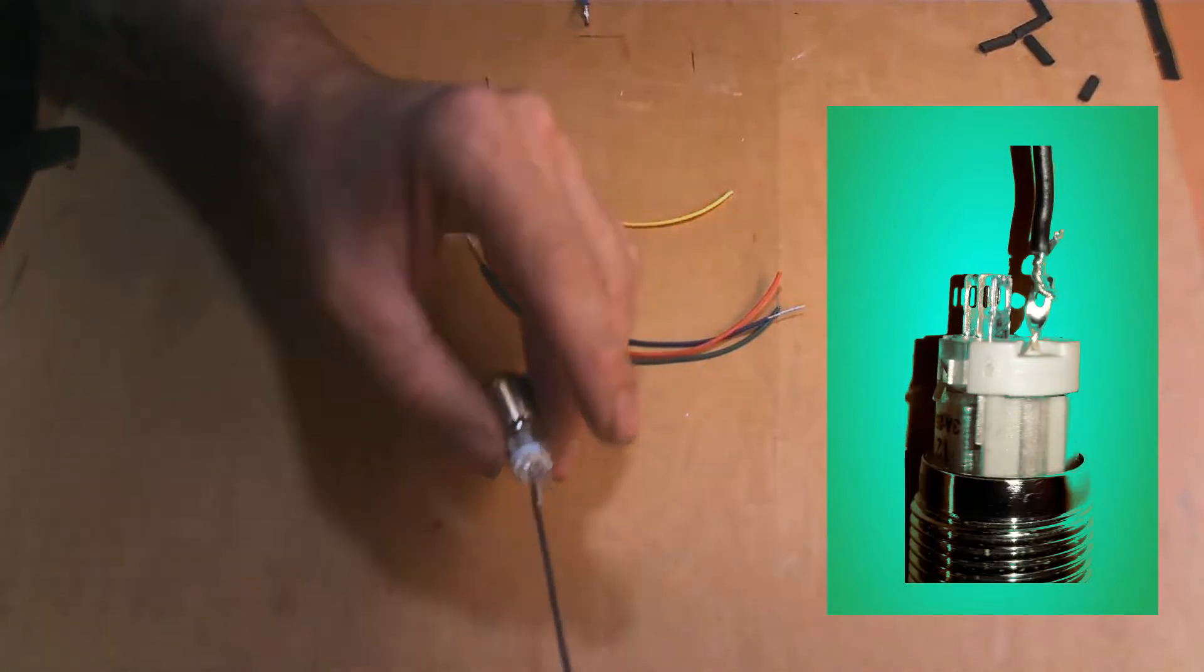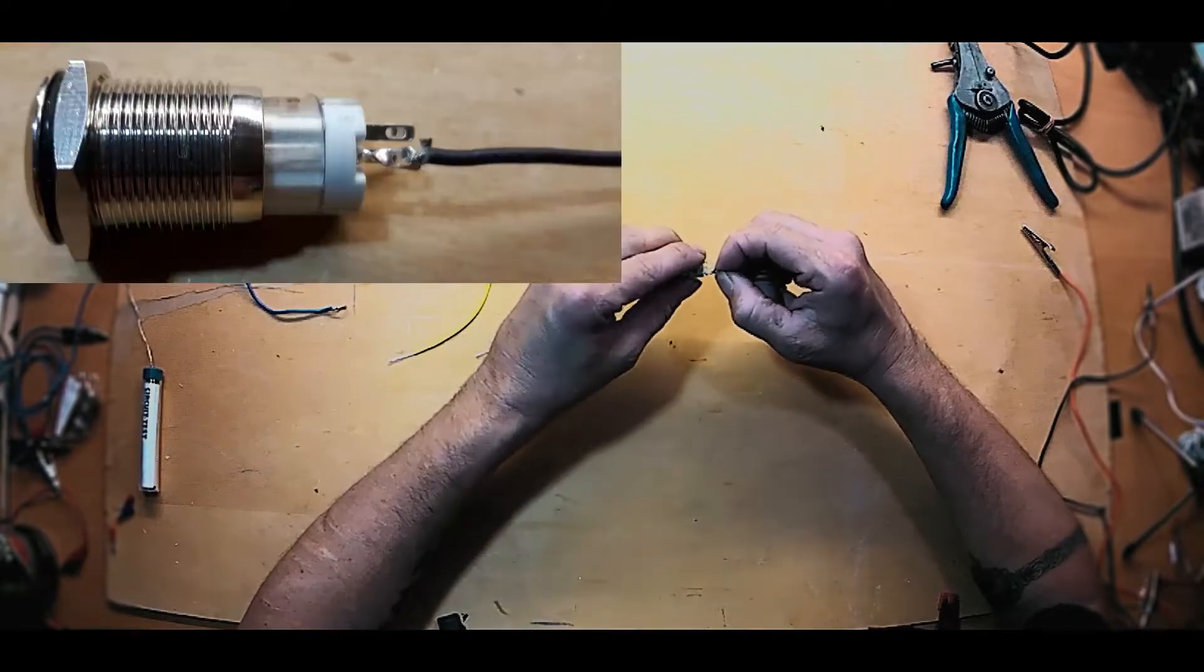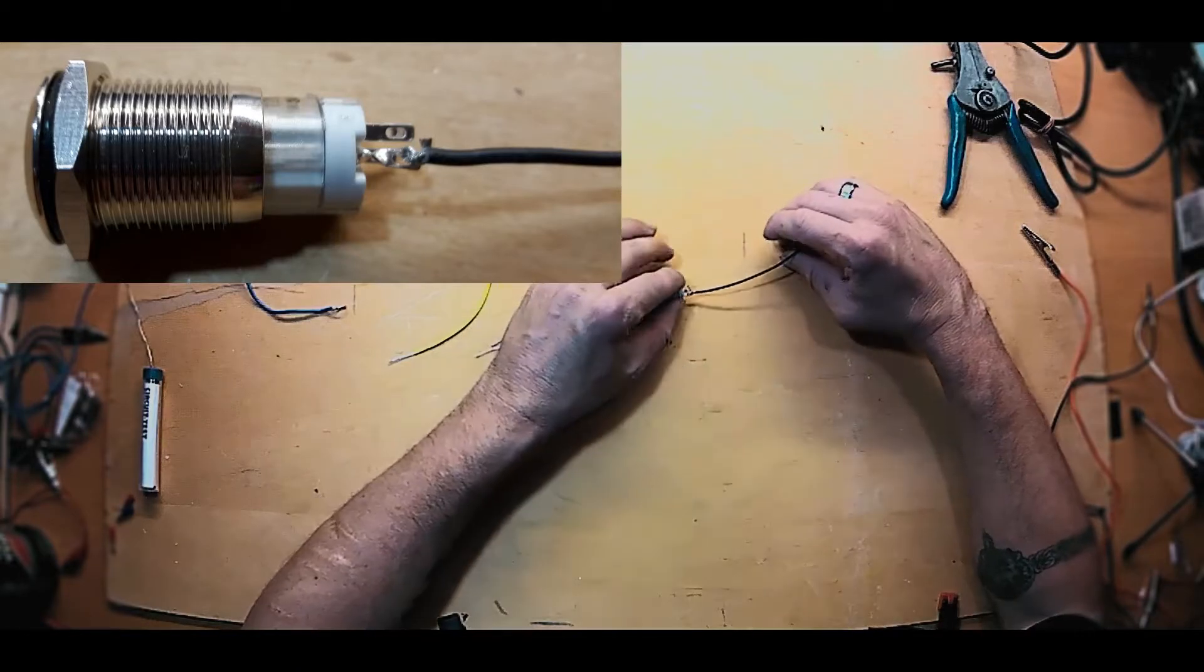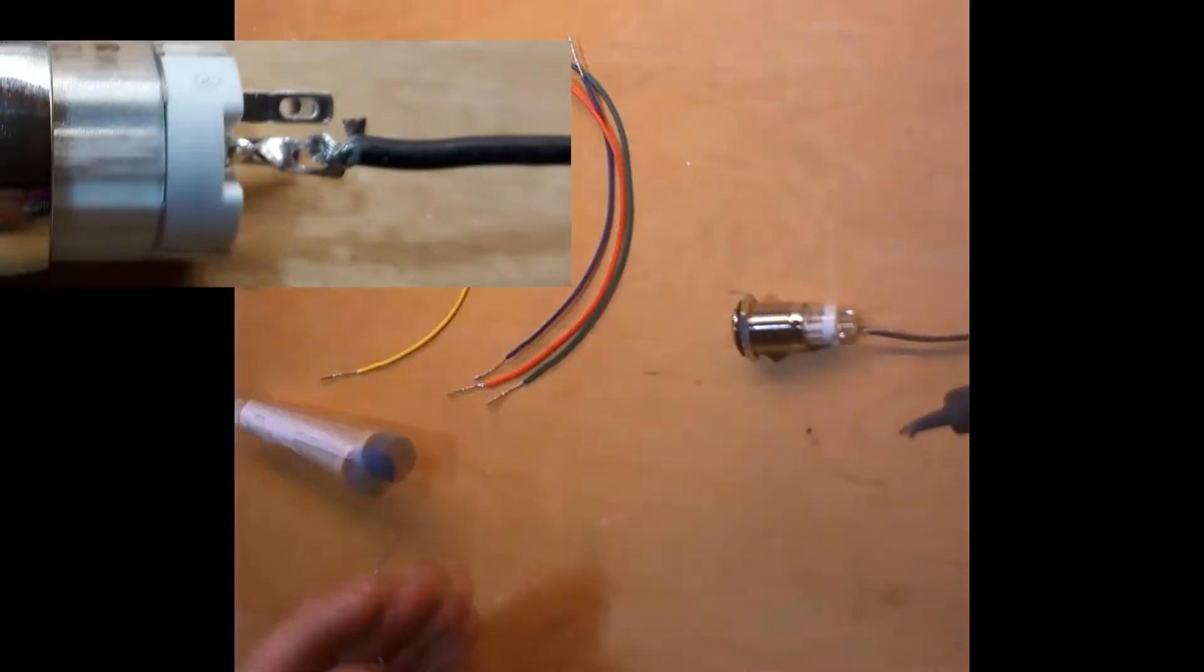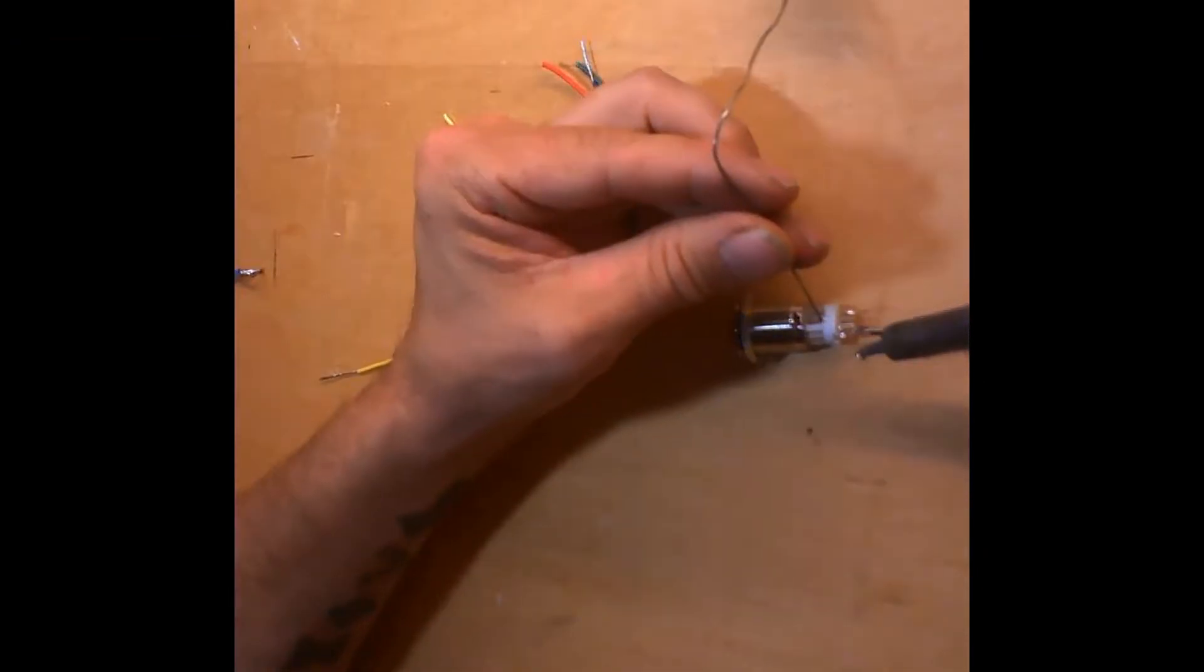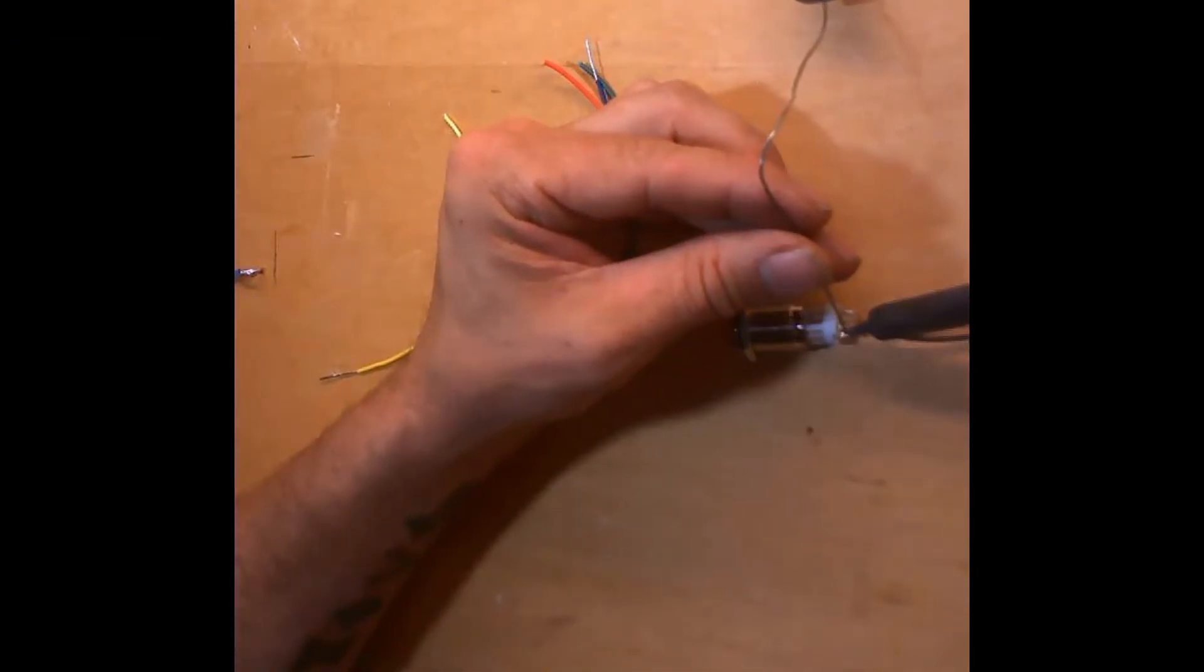Now that wire is kind of locked into position there. So when I take my solder, you don't want to use it too long. Some of these, they're fairly robust thermally, but I still don't like to hold the solder on there too long at all. So putting a little solder on there, and you're done.